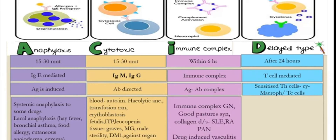In Type 3 immune complex reactions, antigen-antibody complexes are formed and deposited in the basement membrane, producing hypersensitivity. Examples include Goodpasture syndrome, SLE, rheumatoid arthritis, polyarteritis nodosa, and drug-induced vasculitis. If these are difficult to remember, focus on the other three types.